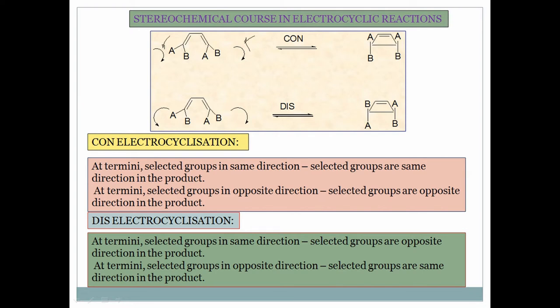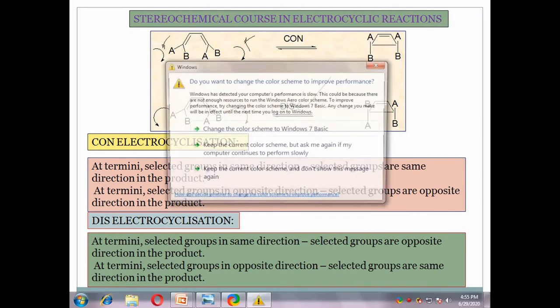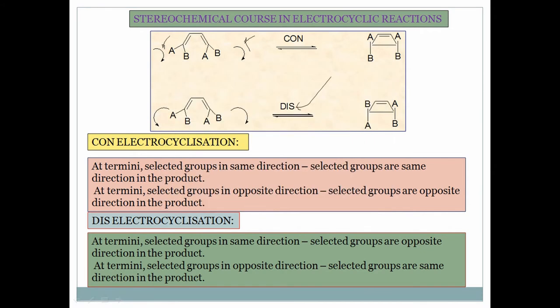If both terminals rotate in the same direction — both clockwise or both anti-clockwise — it is conrotatory (con) electrocyclization. In disrotatory (dis) electrocyclization, one terminal rotates clockwise and the other rotates anti-clockwise, or vice versa. So now you know con mode and dis mode of electrocyclization.